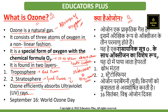When we talk about ozone found in two layers — troposphere and stratosphere — the one found in the stratosphere is good ozone, and the one found in the troposphere is bad ozone.